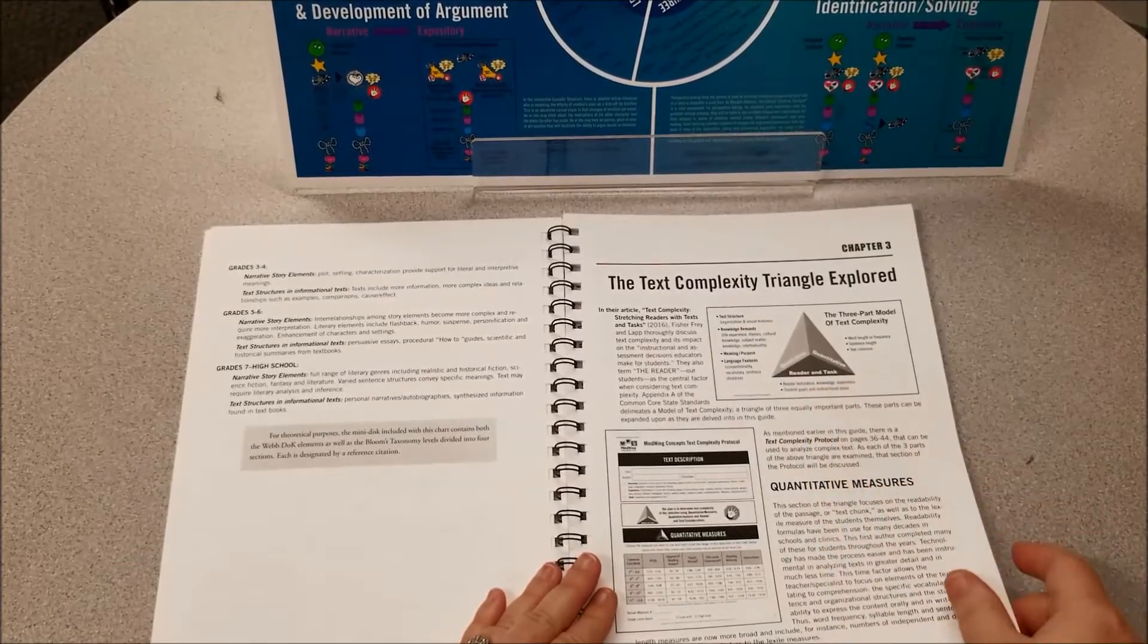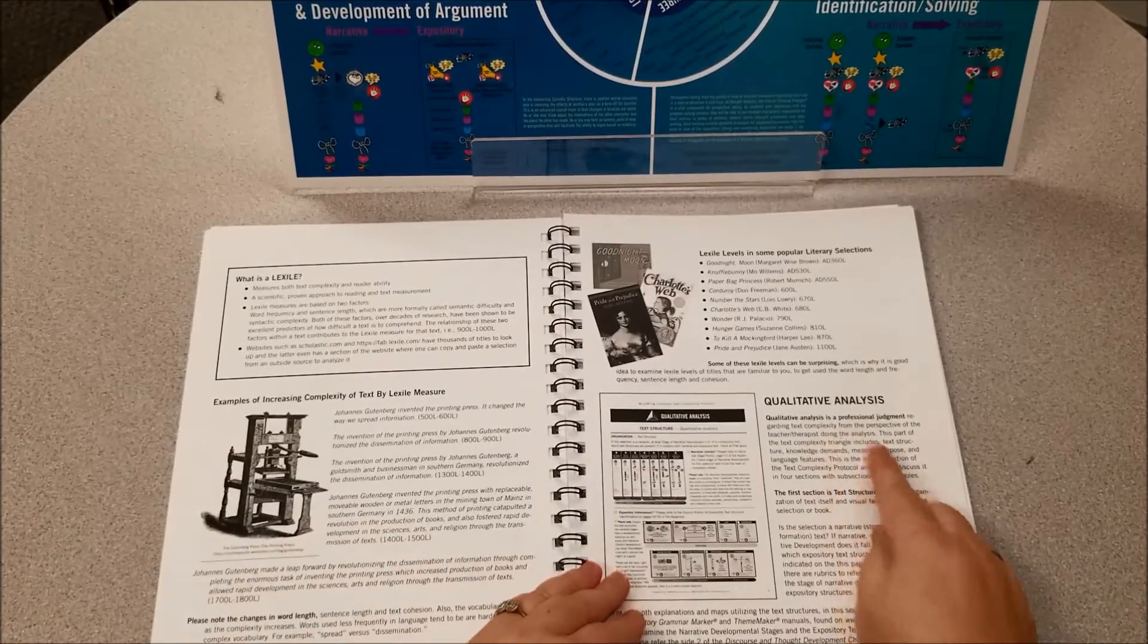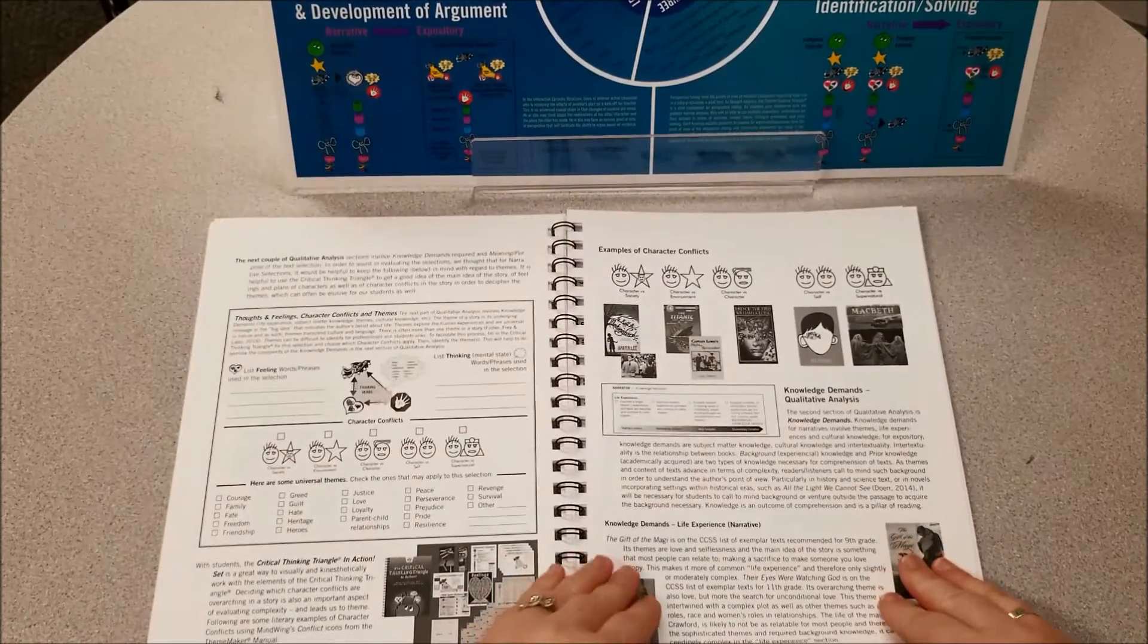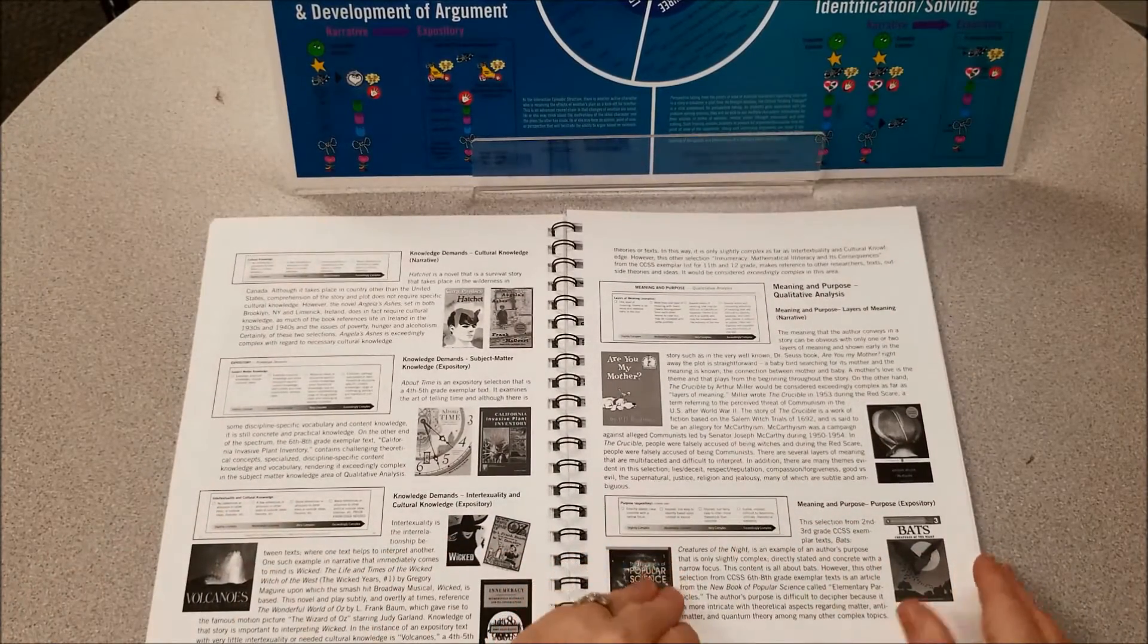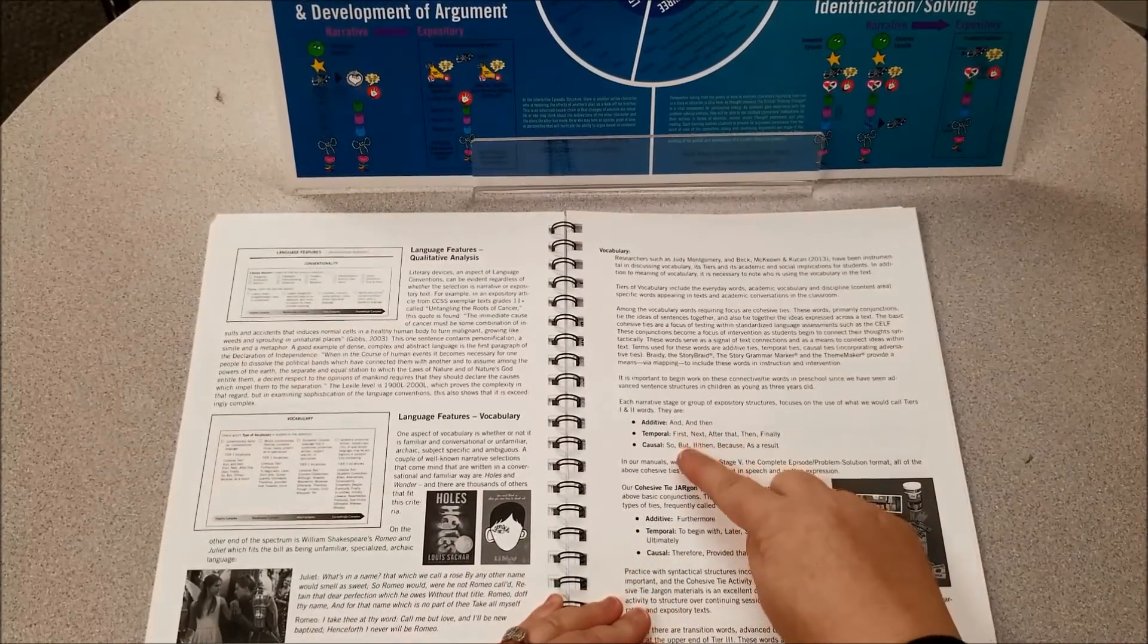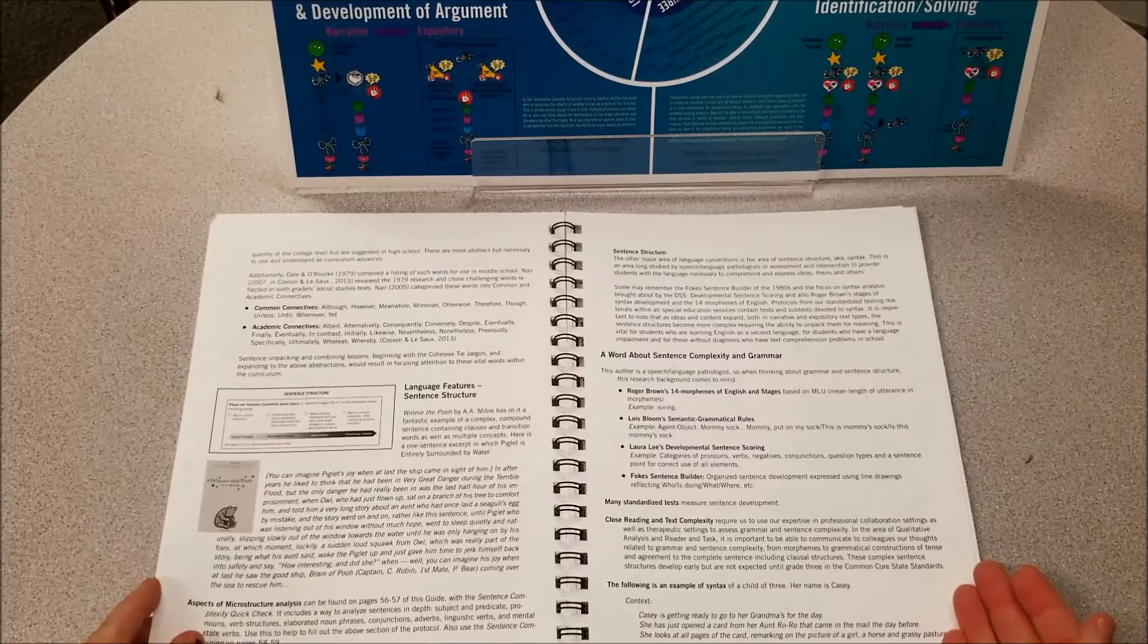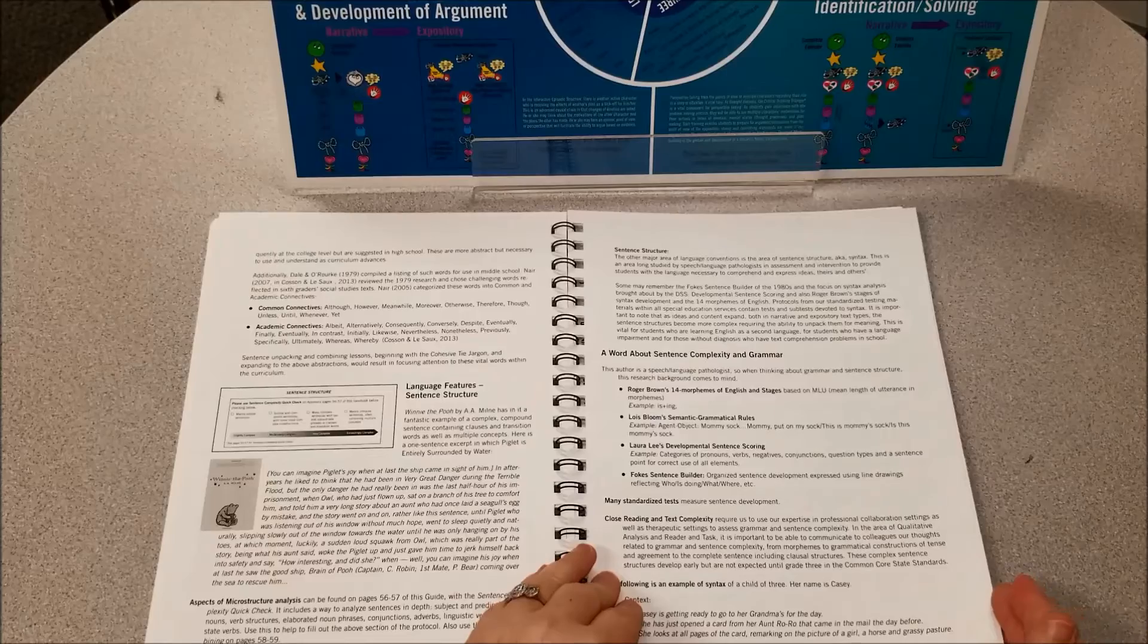The three parts of text complexity are discussed here: quantitative measures such as Lexile, which is sentence length and word frequency; qualitative analysis such as visual features, text structures, feelings and conflicts, themes, character conflicts; knowledge demands such as life experiences and cultural knowledge and subject matter knowledge; meaning and purpose; language features vocabulary such as cohesion and sentence structure, as well as grammar.